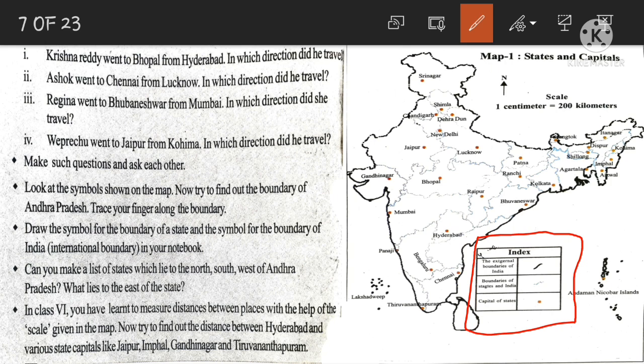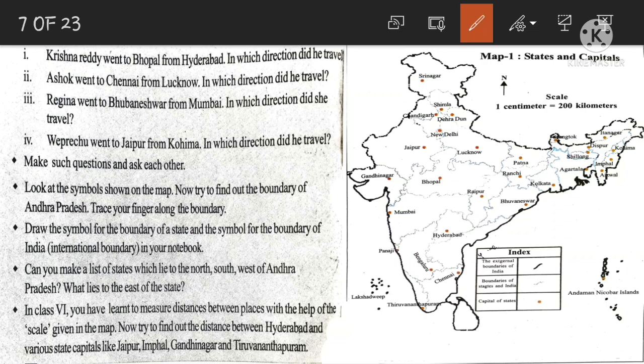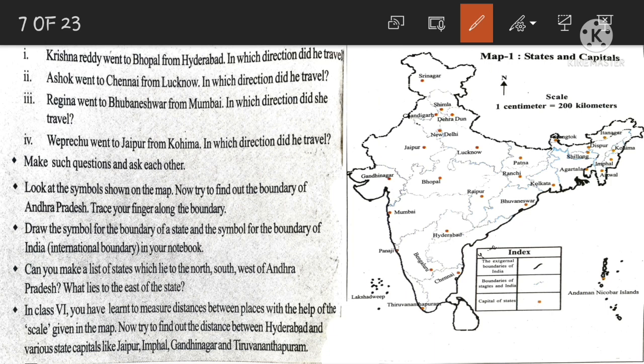Next question: Draw the symbol for the boundary of a state and the boundary of India in your notebook — see the index table, there are symbols; draw them in your notes. Can you make a list of states which lie to the North, South, and West of Andhra Pradesh? What lies to the East of the state?